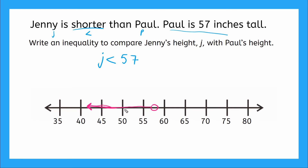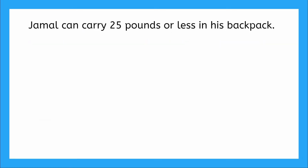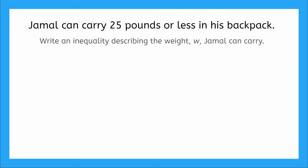Let's do one more together. This one says Jamal can carry 25 pounds or less in his backpack, and we need to write an inequality describing the weight W that Jamal can carry. I'm going to write down my variable W. Jamal can carry 25 pounds or less, so we have equal to 25 pounds or less than 25 pounds. Combining the equal symbol and the less than symbol, the weight W is less than or equal to 25 pounds.